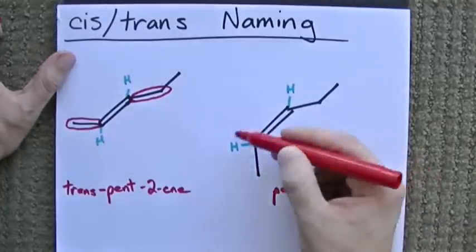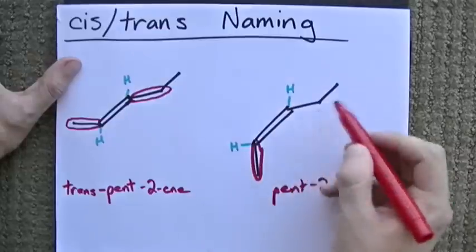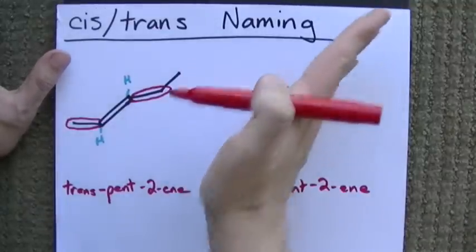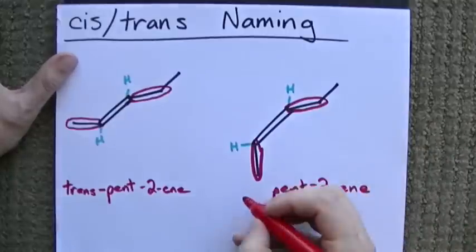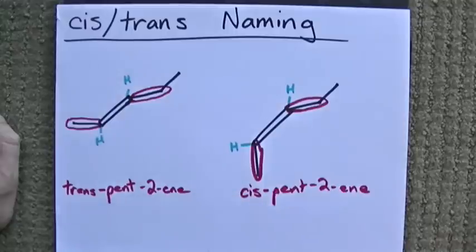Between these two parts, this takes precedence. And between these two, this takes precedence. Along the double bond, they're both on the same side, and we call it cis. This is how we demonstrate the two different configurations that there can be. Trans-pent-two-ene and cis-pent-two-ene.